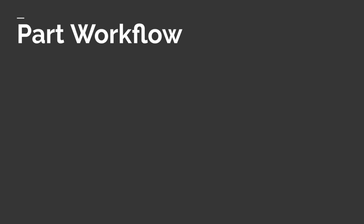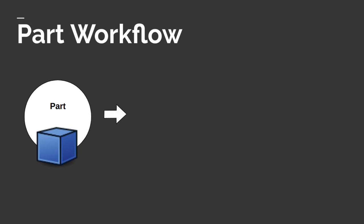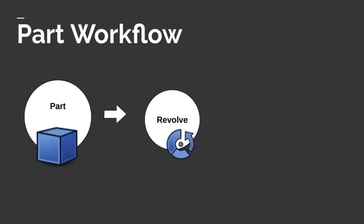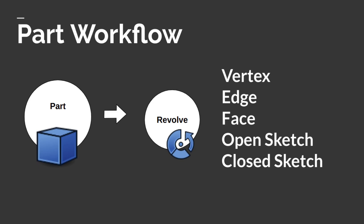We're going to be focusing heavily on the part workbench and understanding how the part workbench and its revolve tool differs from the part design. We'll learn the flexibility of the part revolve using the vertex, edge, face, open sketch, and closed sketch. By the end of this tutorial we'll be demonstrating each of those and you'll have an understanding of where we can use those in our projects.